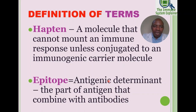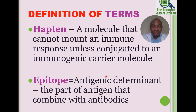Examples of haptens include certain viruses that are too small — below 600 daltons — for the immune system to detect. They cannot mount an immune response on their own, but when coupled to a carrier molecule they can.